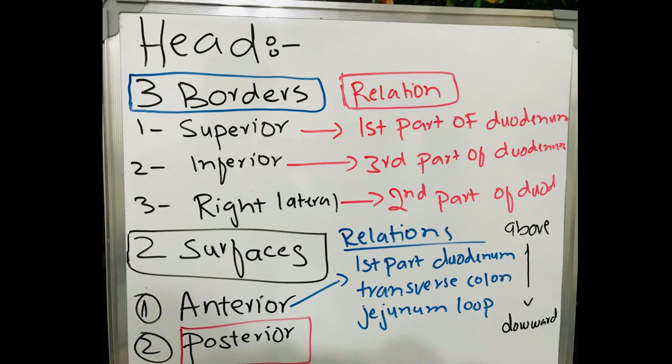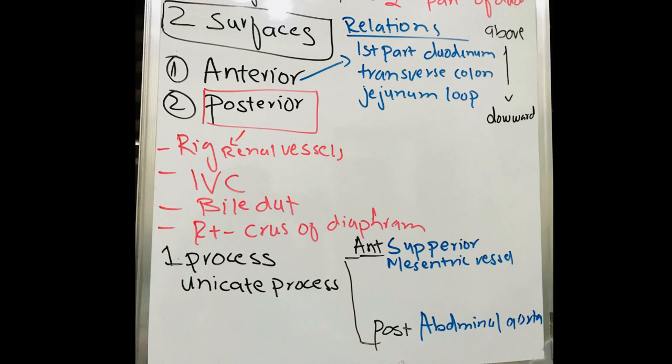The superior border of the head is related to the first part of the duodenum. The inferior border is related to the third part of the duodenum. The right lateral border is related to the second part of the duodenum. The anterior surface is related to the first part of duodenum, transverse colon, and a loop of jejunum, in sequence from above downward.